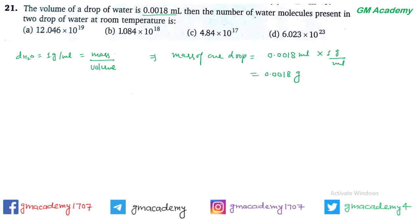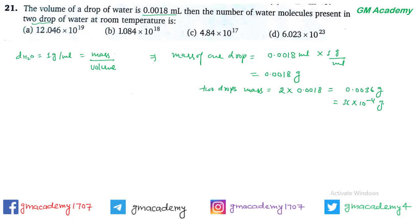Number of water molecules present in two drops of water निकालते हैं। One drop का mass 0.018 g है, तो two drops का mass = 2 × 0.018 = 0.0036 gram, जिसे 36 × 10⁻⁴ gram भी लिख सकते हैं।